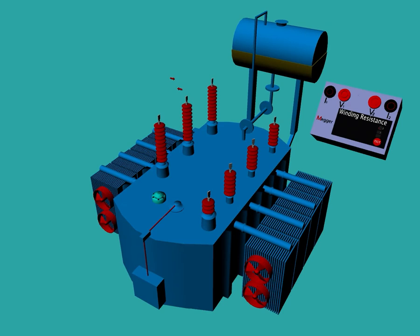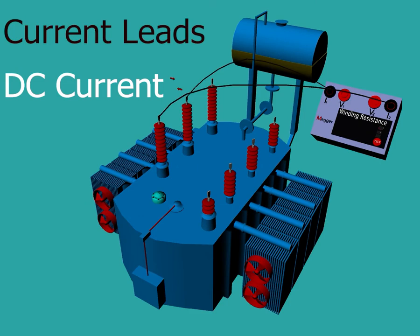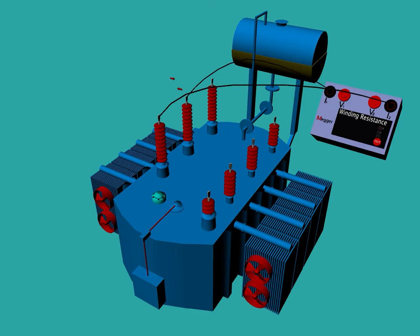Next we explain the procedure of the winding resistance test. In this test, DC current is injected into winding through two current leads and the resultant voltage drop is measured through two voltage leads. Current leads are always connected outwards, whereas the voltage leads are connected inwards.